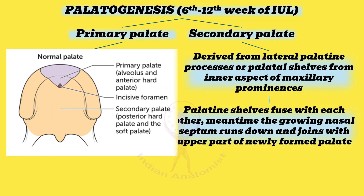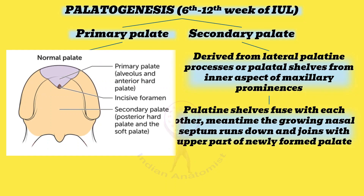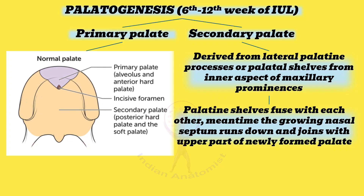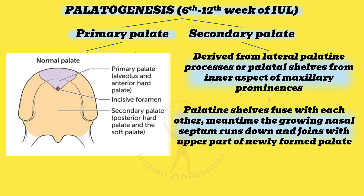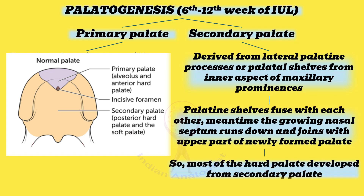The secondary palate develops from maxillary prominences called palatine shelves, which fuse at the midline anteriorly. During the seventh to eighth week, each palatal shelf elongates and ascends to a horizontal position superior to the tongue. These processes approach each other and fuse in the median plane. The major part of the hard palate is formed from the secondary palate, except the posteriormost part, which forms the soft palate and the uvula — an unossified part of the lateral palatine process.